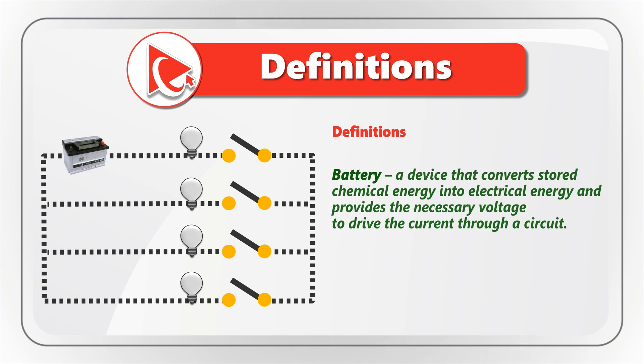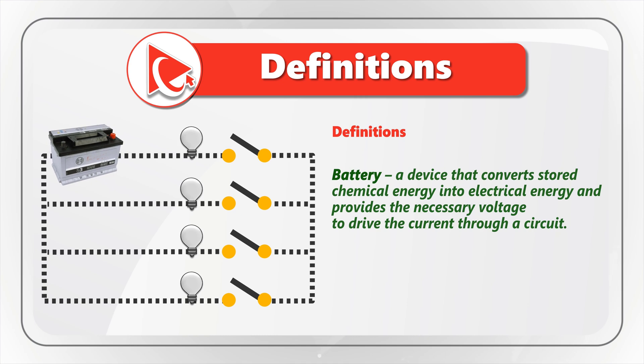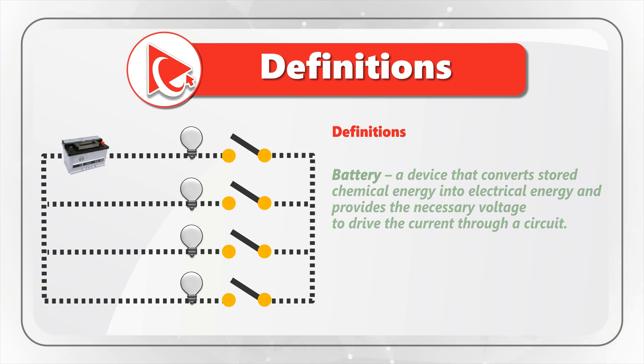Let's start with the battery. A battery is a device that converts stored chemical energy into electrical energy and provides the necessary voltage to drive the current through the circuit.